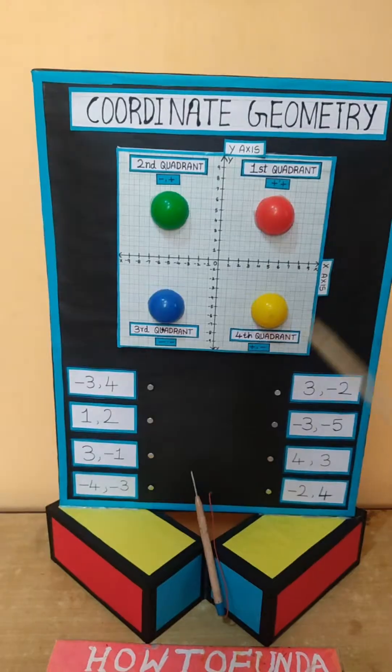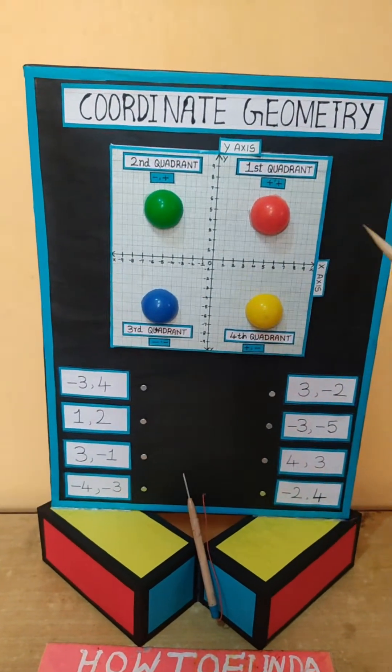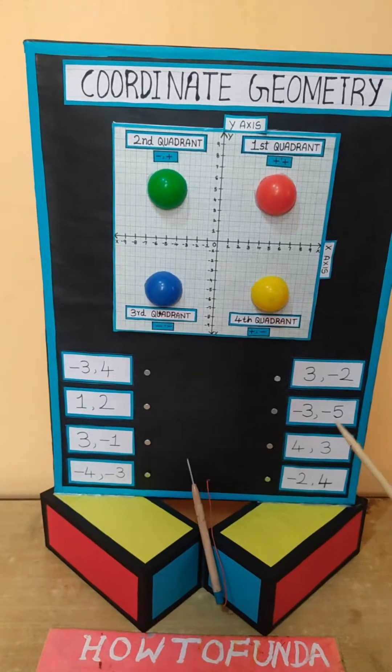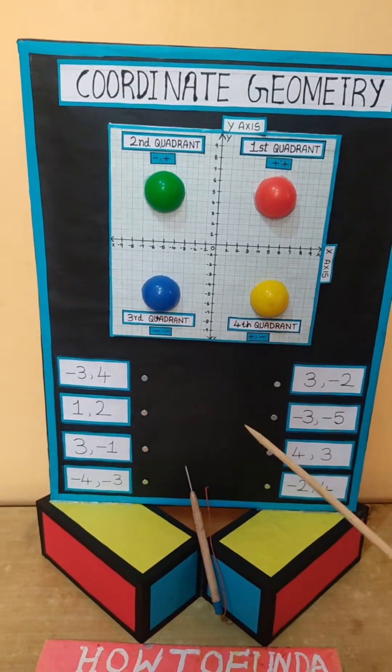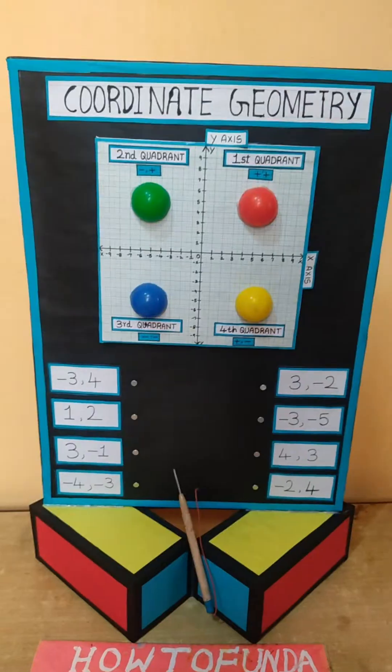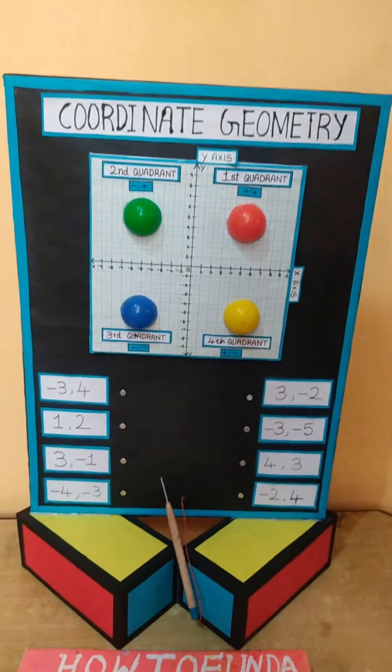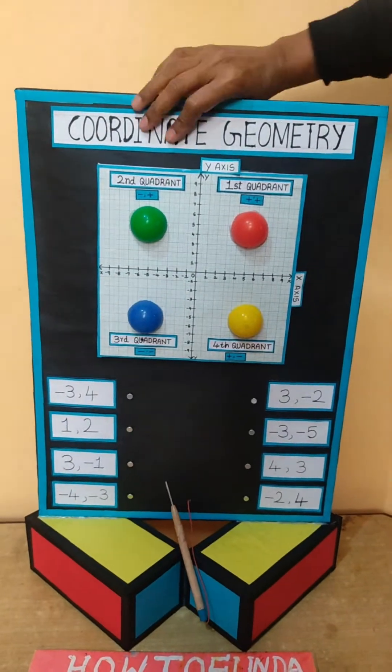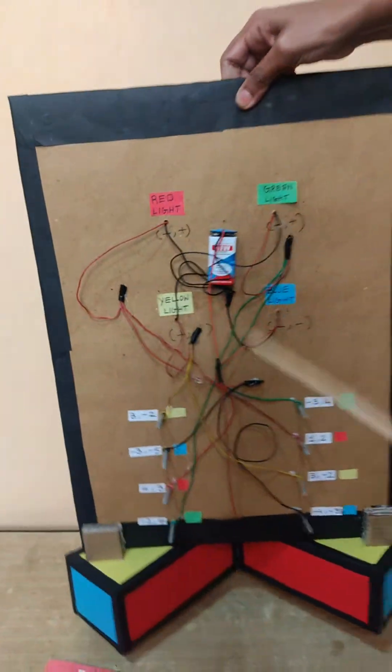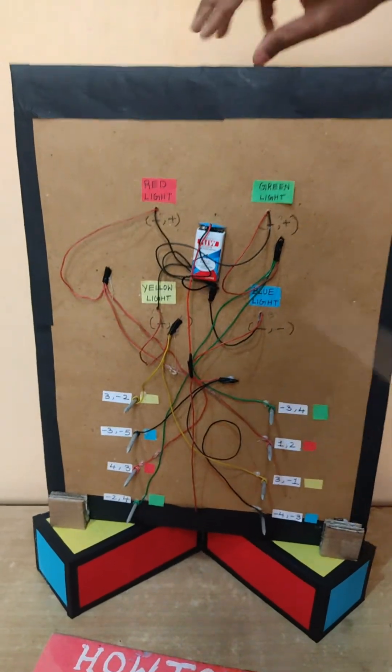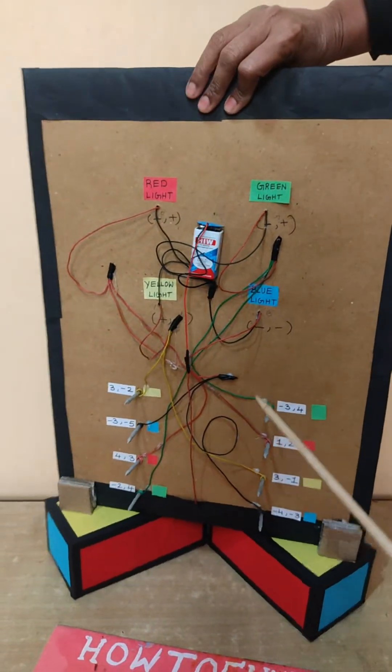Which quadrants are those based on the x and y coordinates? I hope you guys got clarity on how we can explain this coordinate geometry working model in your math exhibition projects. This concept is completely driven by an electric circuit with various wire mechanisms.